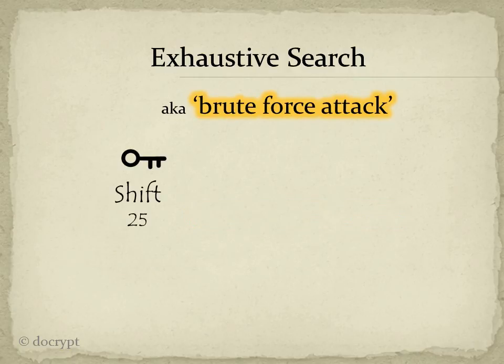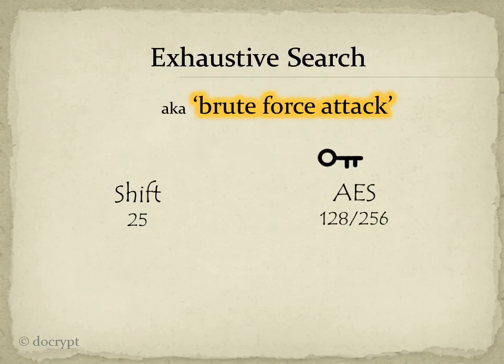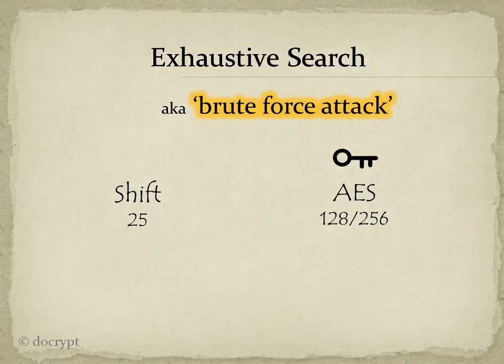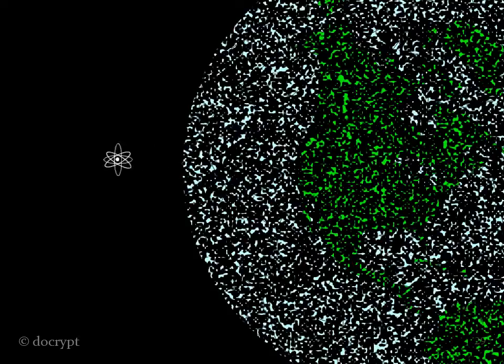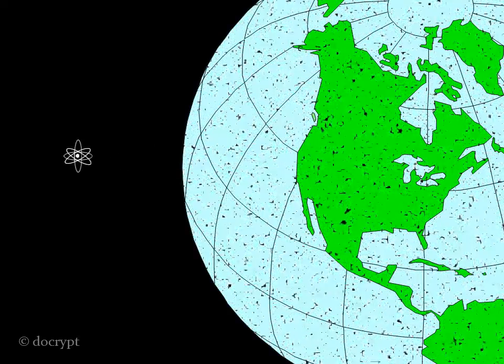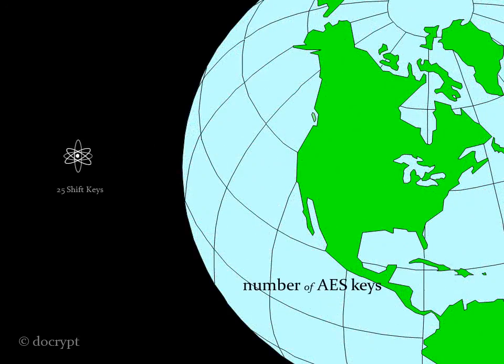Shift only has 25 possible keys. AES keys are usually described as 128 or 256. This does not mean that AES keys are only about 5 or 10 times bigger than shift keys. It's more like comparing the size of an atom to the size of the entire Earth, and even that is severely understating the situation. Our next pre-computer method has a universe full of keys.